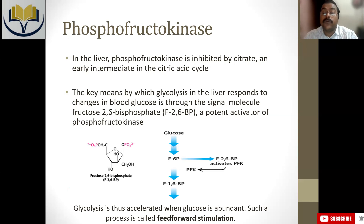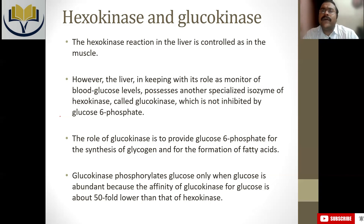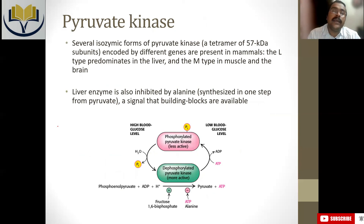Phosphofructokinase can also be controlled by fructose 2,6-bisphosphate. In the liver, hexokinase doesn't have a special regulatory role, but glucokinase plays a very important role. Glucokinase has a very low affinity for glucose compared to hexokinase. Affinity can be defined in terms of Km: high Km means low affinity, and low Km means high affinity — Km and affinity are inversely proportional. Hexokinase has a low Km (high affinity for glucose), while glucokinase has a high Km (low affinity for glucose).